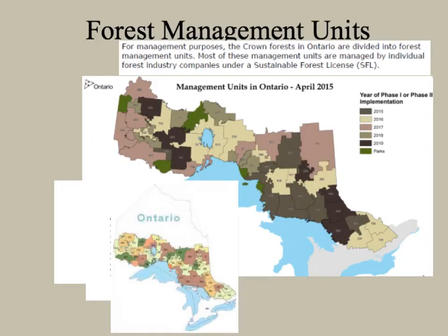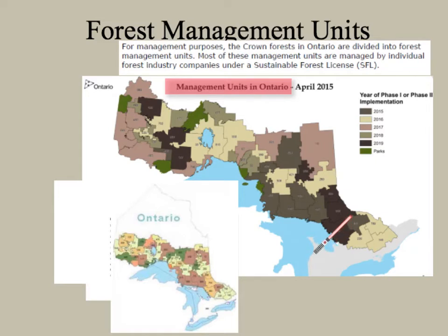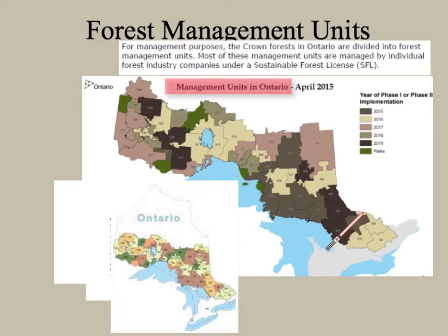The area of undertaking has been broken apart into categories called management units, and these management units are changing over the years as some are being amalgamated. For reference, Algonquin Park is a recognizable landmark on the map. Nearby areas include the Ottawa Valley, the Nipissing Forest Management Unit, and the French Severn Forest Management Area, managed by West Wind. In Ontario there are roughly around 40 management units, each shown in different colors on the map.